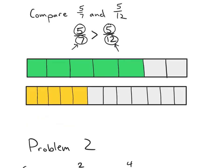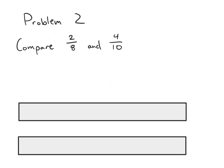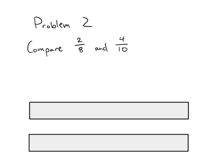That's not always the case, so let's look at Problem 2: comparing two-eighths and four-tenths. This problem is more difficult because we have different numerators and denominators. My goal is to find a common numerator or denominator by multiplying the numerator and denominator of one fraction by the same number. Looking at two-eighths, if I multiply the numerator by two, I get a numerator of four, matching the second fraction.